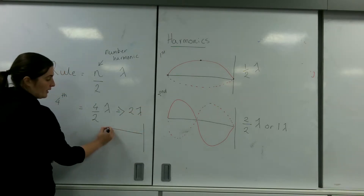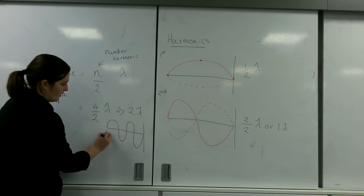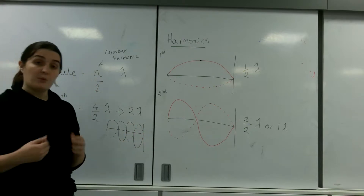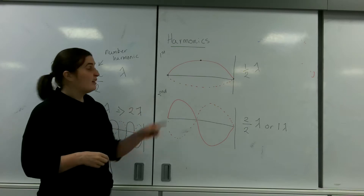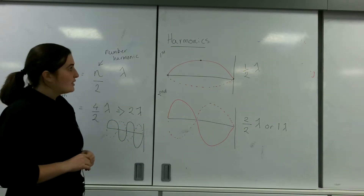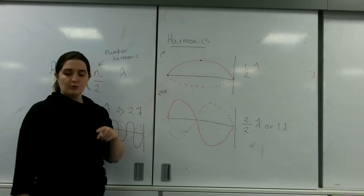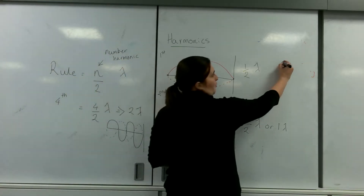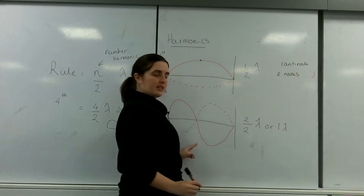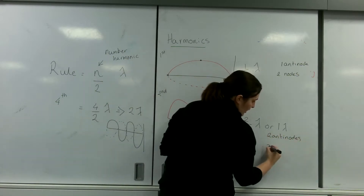It would look something like this — 1, 2 bumps, both at the same amplitude. Another way of checking it is how many bumps you have. The first harmonic has 1 bump, the second has 2, the fourth has 1, 2, 3, 4. It's also important to know that you have more antinodes than nodes. So for the first harmonic I have 1 antinode and 2 nodes. For the second harmonic I have 2 antinodes and 3 nodes.